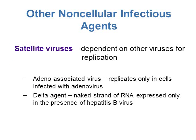Other non-cellular infectious agents include satellite viruses — viruses that depend on other viruses to replicate. Adeno-associated viruses only replicate if the cell is also infected with an adenovirus. Delta agents are naked strands of RNA expressed only when the cell is also infected with hepatitis B. So some agents only replicate if their partner virus is present in the same cell.